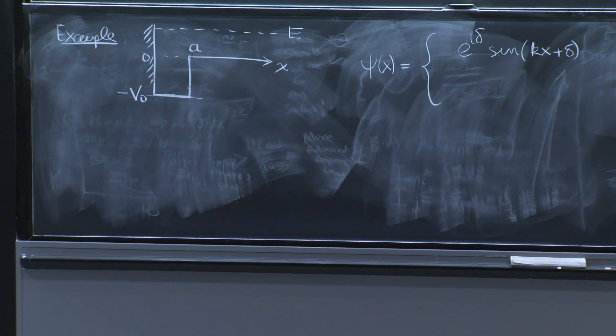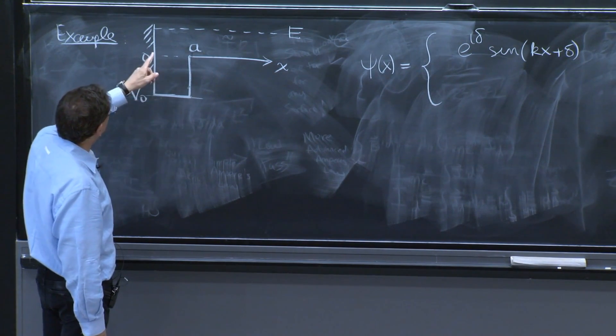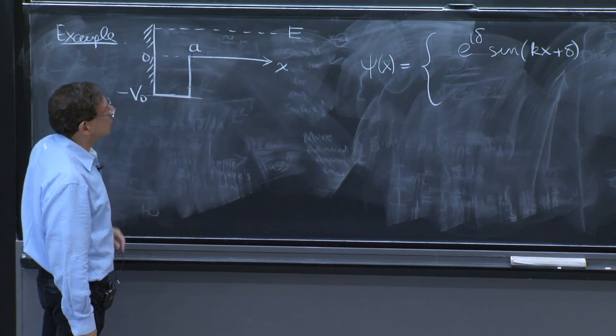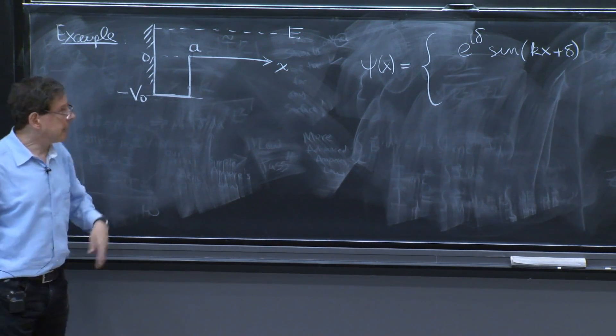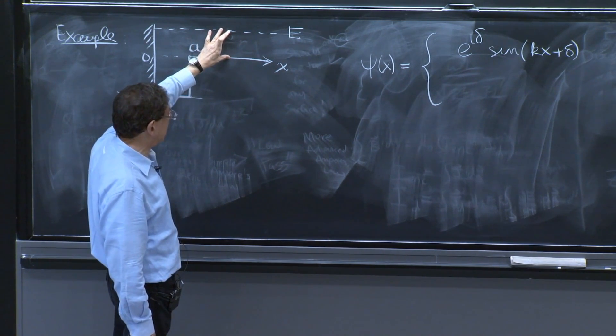Now it could be maybe an e to the i kx or an e to the minus i kx. Neither one is very good because the wave function must vanish at x equals 0. And, in fact, the k that represents the kinetic energy here,